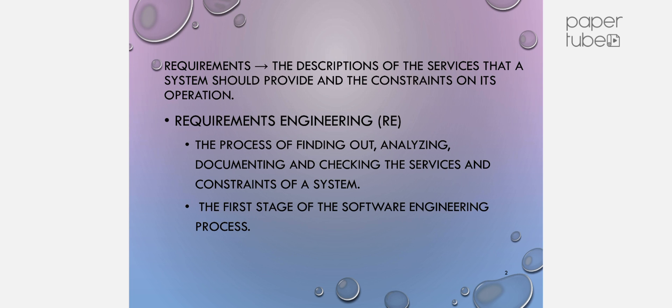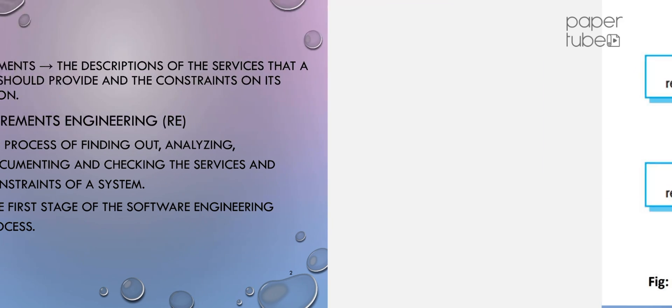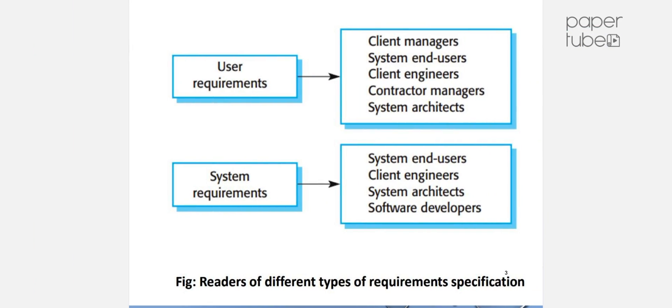Requirement Engineering. There are mainly two types of requirements: User Requirements and System Requirements.